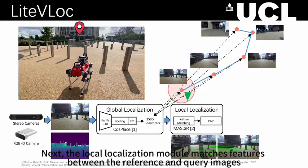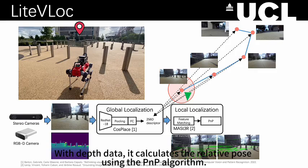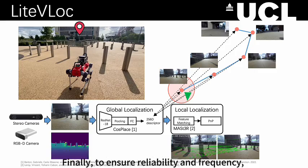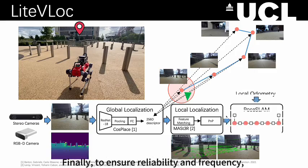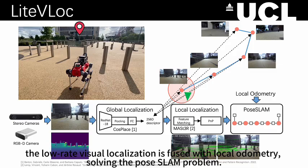Next, the local localization module matches features between the reference and query images. With depth data, it calculates the relative pose using the PnP algorithm. Finally, to ensure reliability and frequency, the low-rate visual localization is fused with local odometry, solving the pose-SLAM problem.